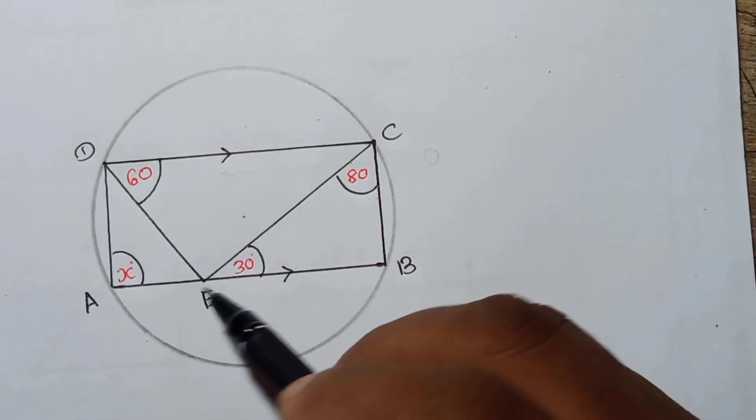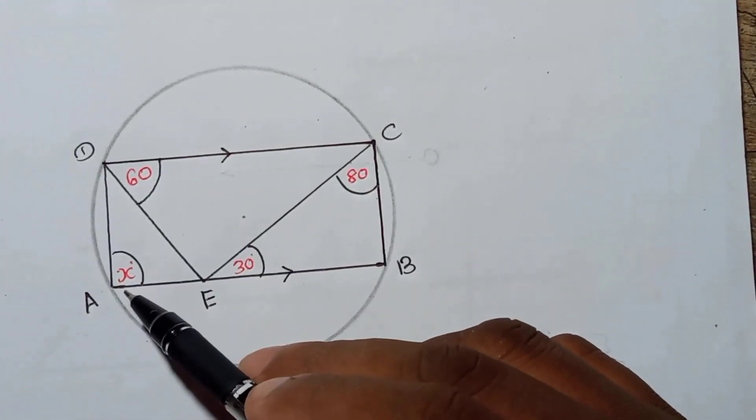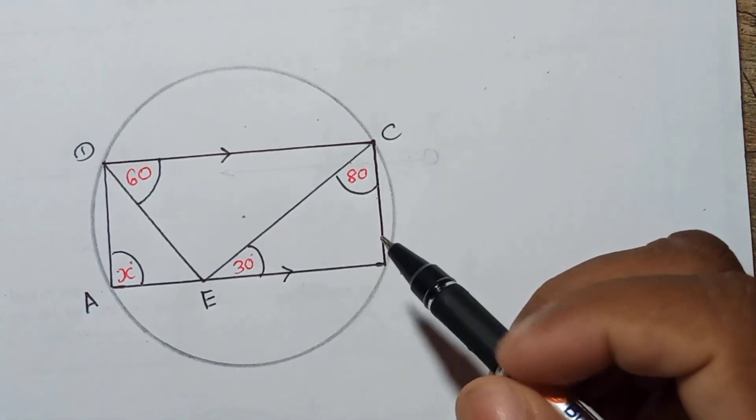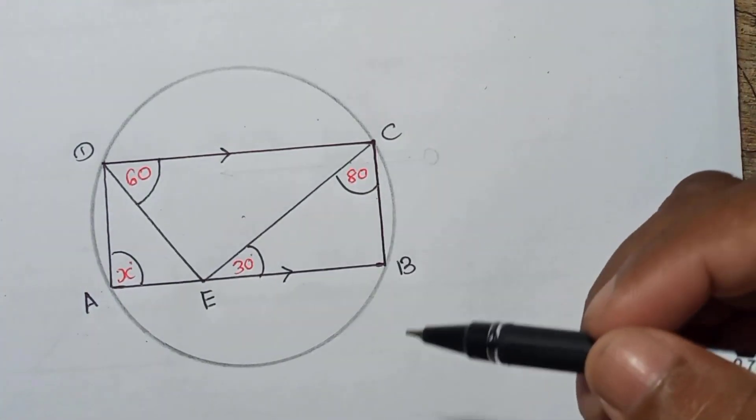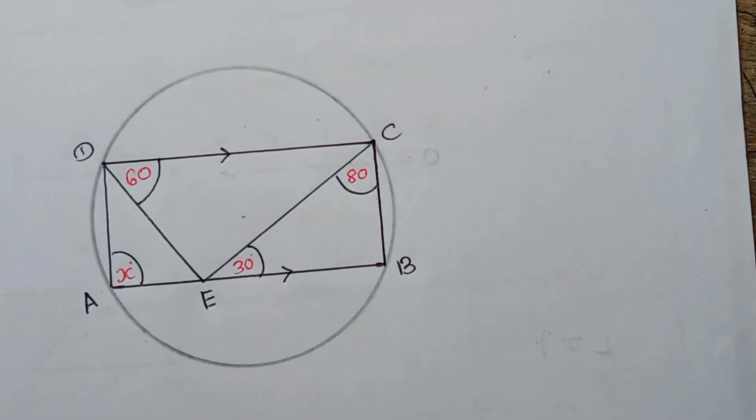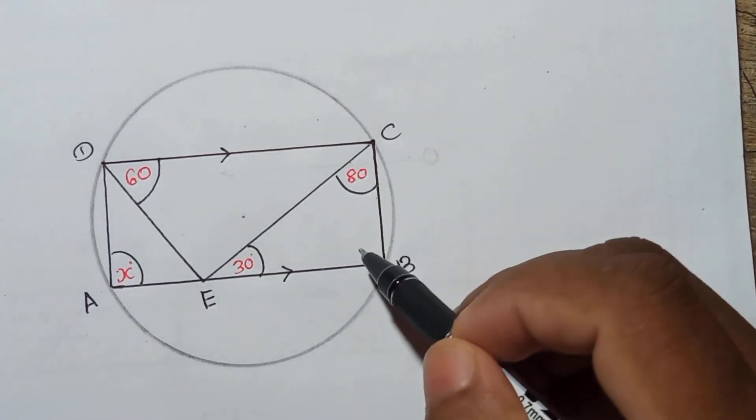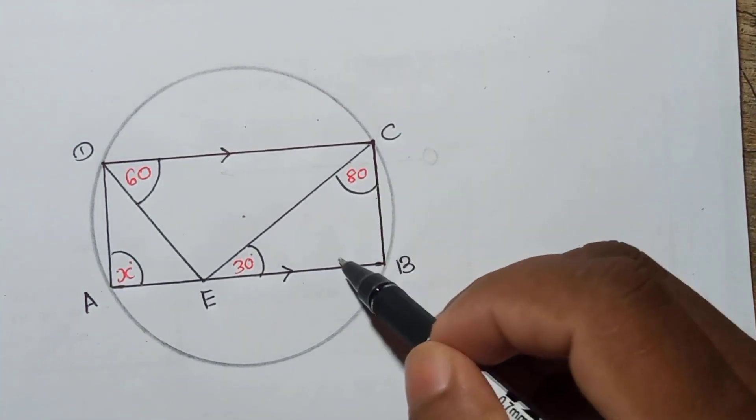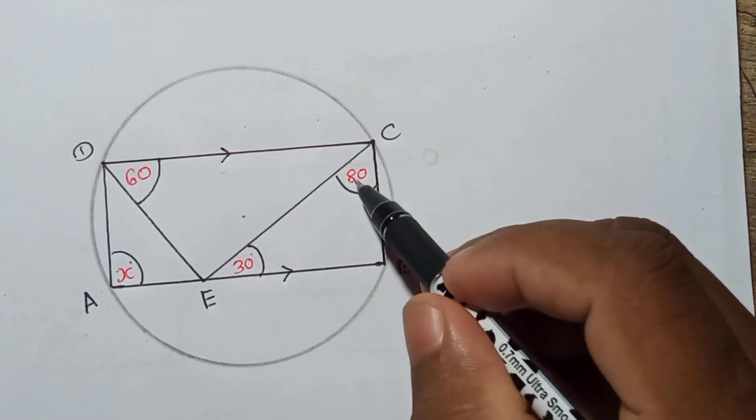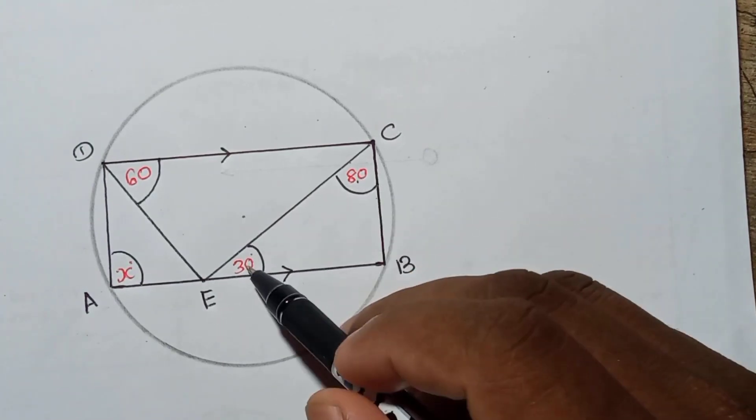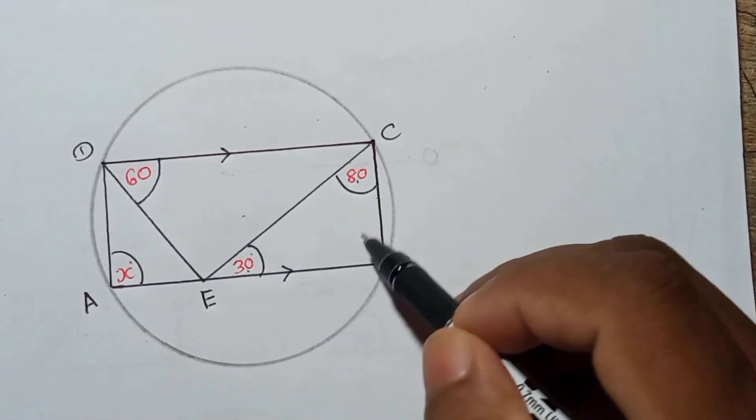Okay, if you need to find this angle x, what you can do, like I told you in the previous questions, try to mark information which you can. Right now here, you can easily find this angle from 180 subtract 80 and 30, because the interior angle of a triangle is 180.